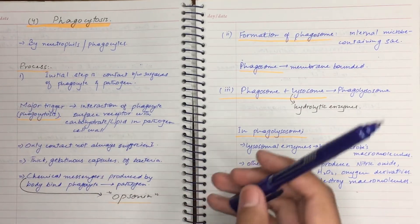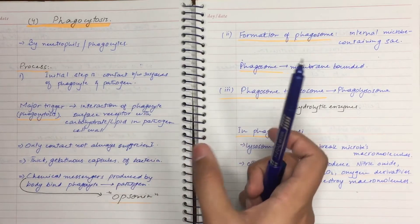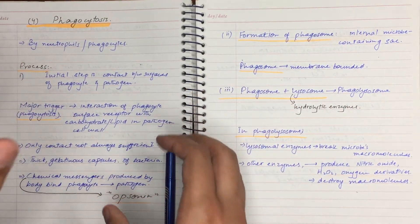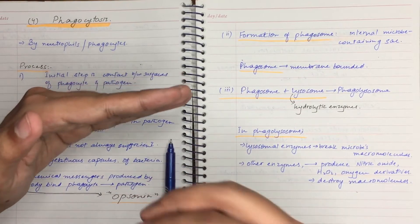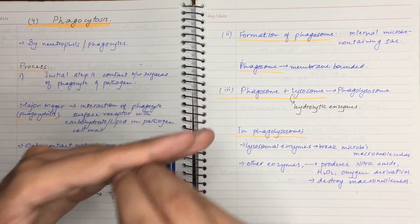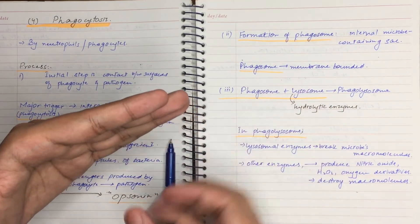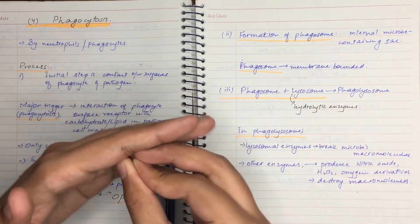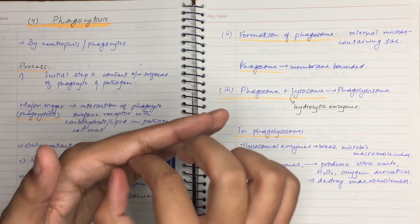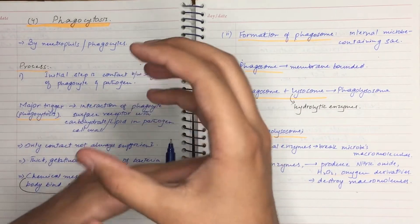The first step is the contact between the surfaces of the phagocyte and the pathogen. In the context of the inflammatory response, vasodilation occurs and neutrophils come out and are attracted to the point of inflammation. Neutrophils reach the microbes at the site of infection.